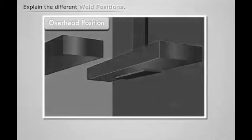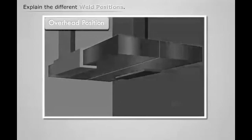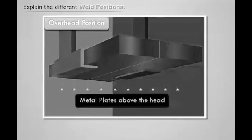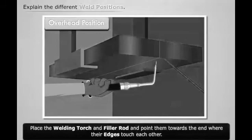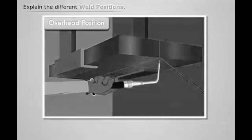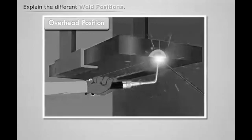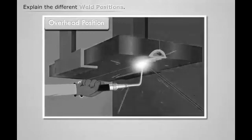Now let us discuss how to produce a weld whose alignment is overhead. First, place the two metal plates above the head of the welder. Then bring the welding torch and filler rod and point them towards the end where their edges touch each other. Now start the welding process proceeding towards the other end.